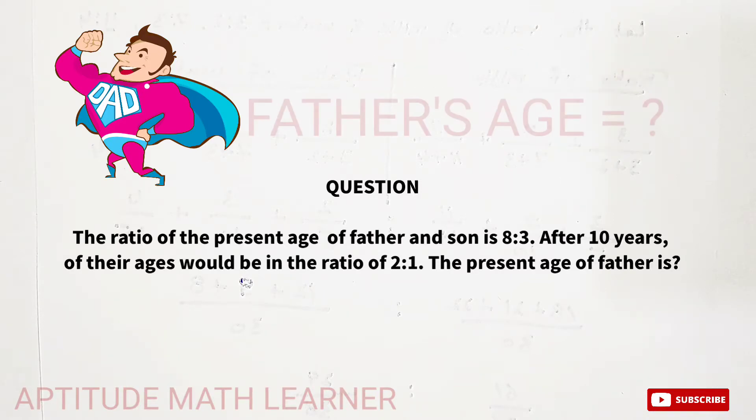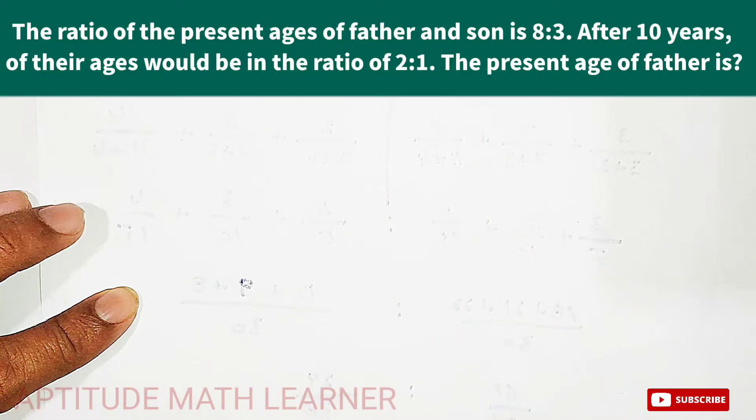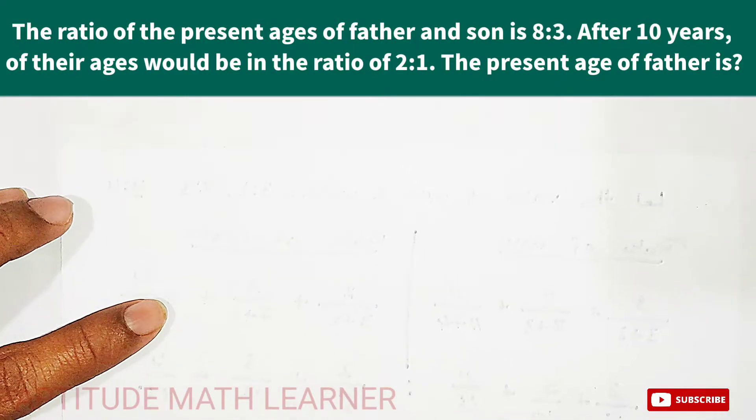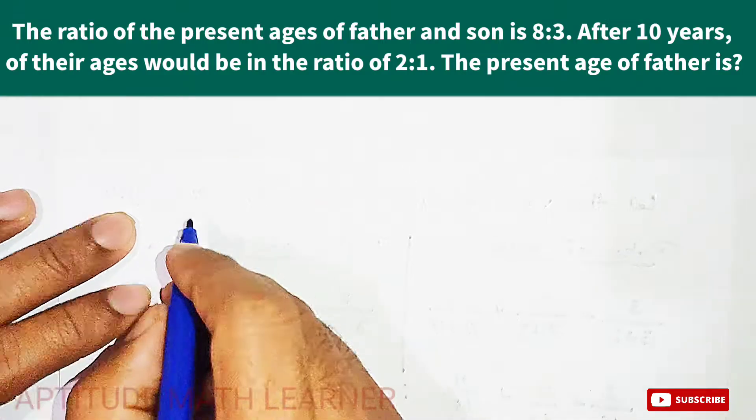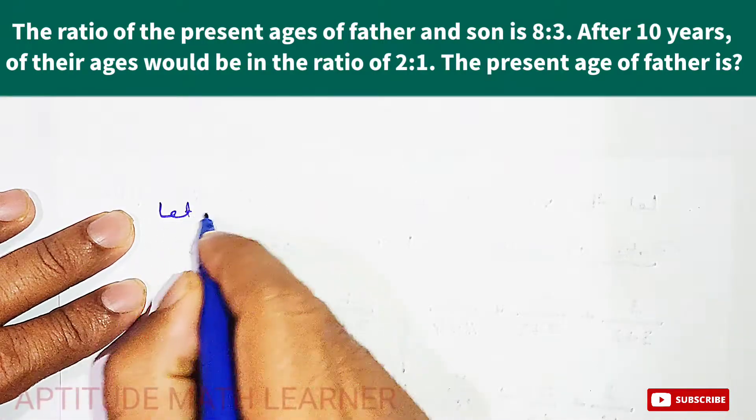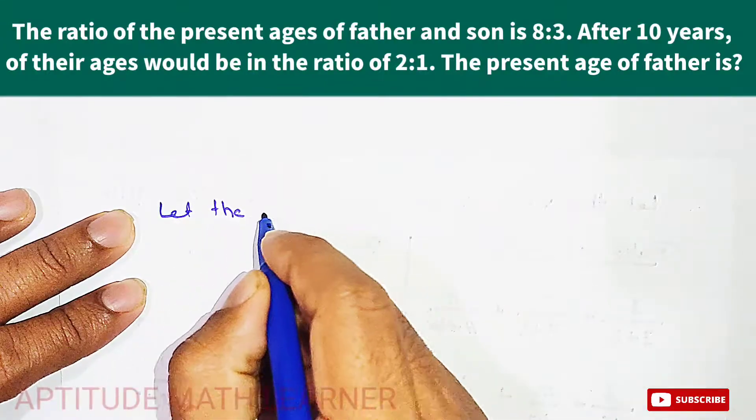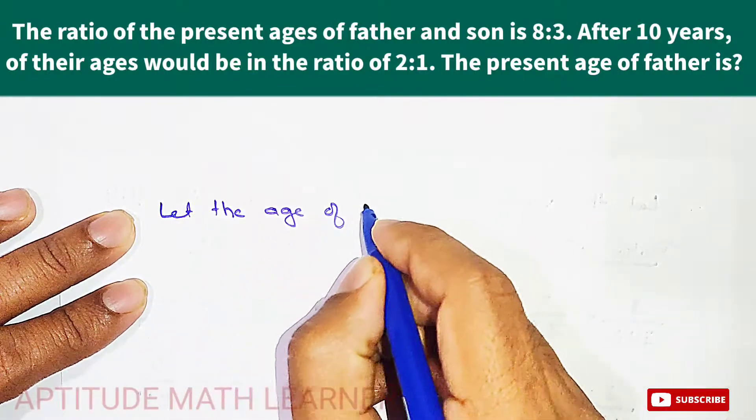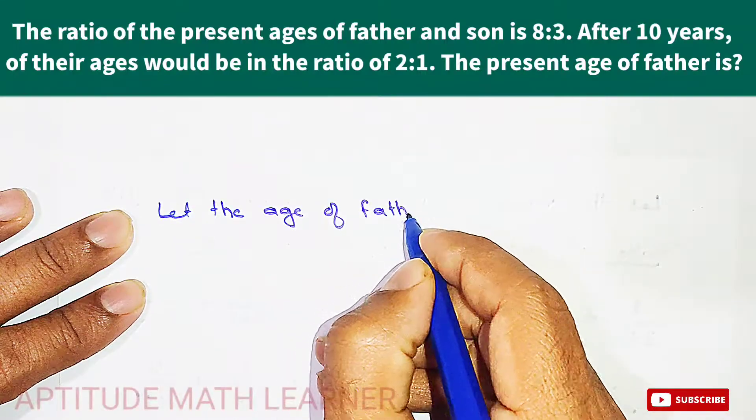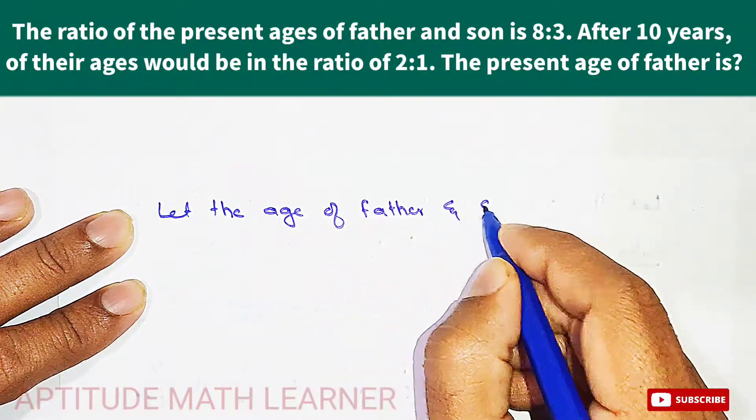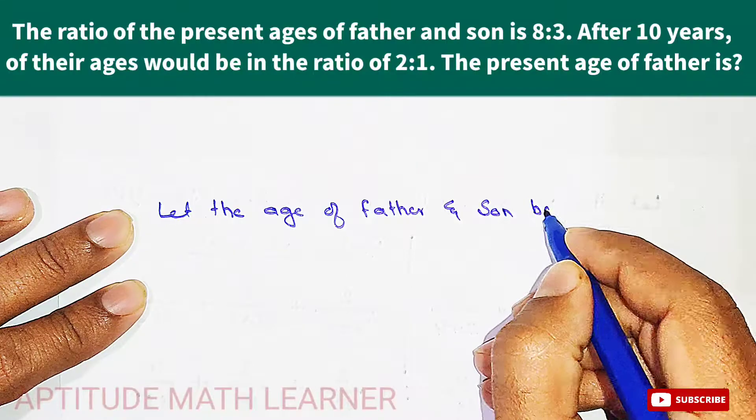The present age of father is what we need to find. So here, the first thing we have to do is let the age of father and son be represented by a variable.